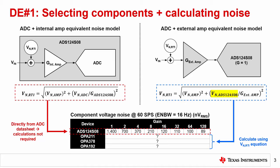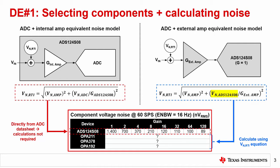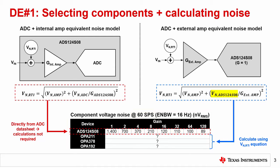Next, determine the total noise performance for each signal chain. In general, you would calculate the input referred noise using the given equations. However, for the ADC with integrated gain, you can typically just copy the values directly from the data sheet. The table shows the ADS124S08 input referred noise values across all available gains using a SYNC3 filter at the target output data rate of 60 samples per second. Note that there is nothing to calculate since these values include the combined ADC and integrated PGA noise. This simplifies system noise analysis compared to using a discrete amplifier with an ADC.